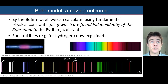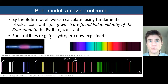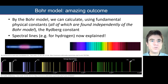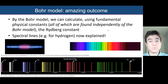So it's an amazing outcome — we can calculate using fundamental physical constants, all found independently of the Bohr model, the Rydberg constant, which in turn explains the spectral lines we see for hydrogen — whether it's the emission spectra from a gas discharge tube, or indeed the reduced lines in the spectrum of the sun, where those absorption dips are beautifully explained by the Bohr model of the atom applied to hydrogen. So I hope you've enjoyed that, and thanks for listening.